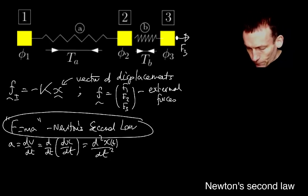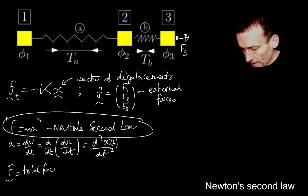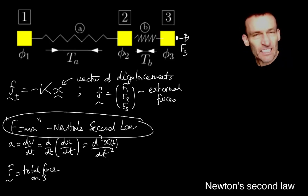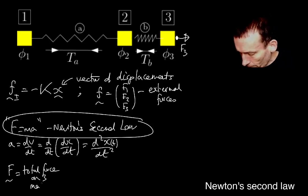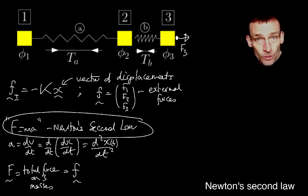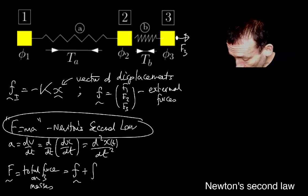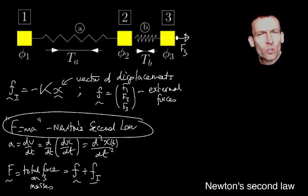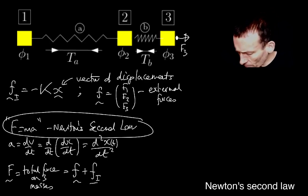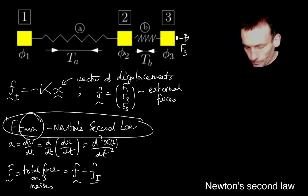Now, the net force, then, if I consider this is the total force on the masses, in this case there's three masses, then this is equal to the total external force plus the internal forces. That's the total forces on the masses. And then what we have to do is this is equal to this ma thing.